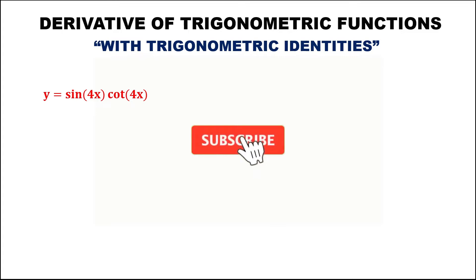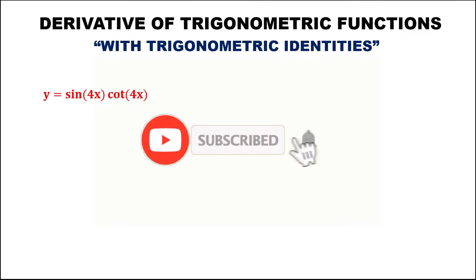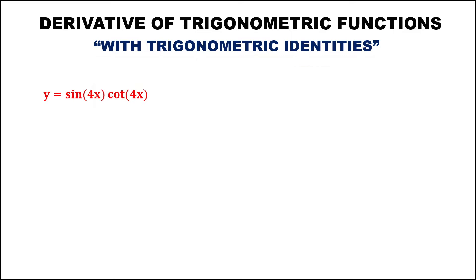Let's work on derivatives of trigonometric functions with trigonometric identities. For this given: y equals sine 4x times cotangent 4x.